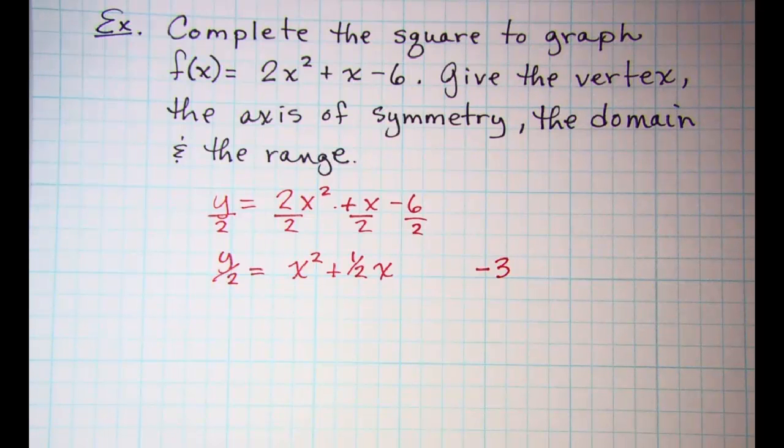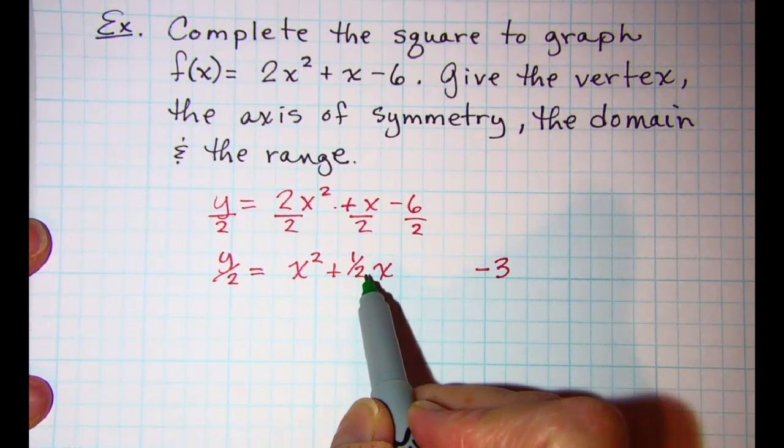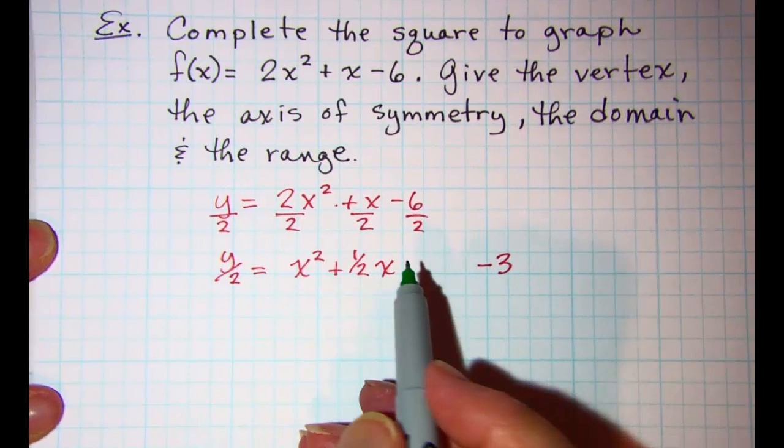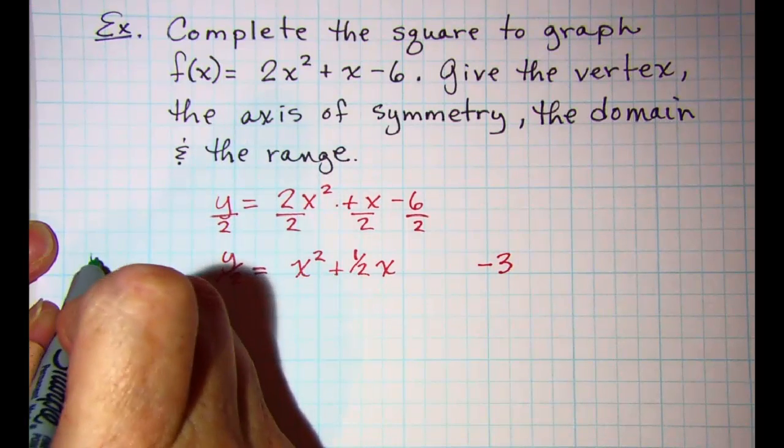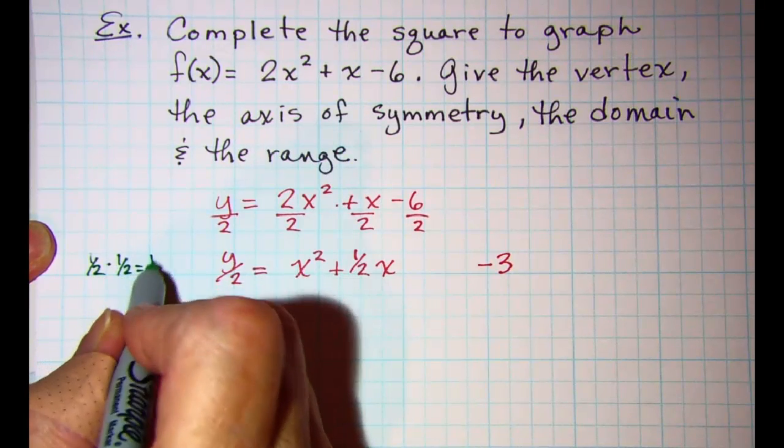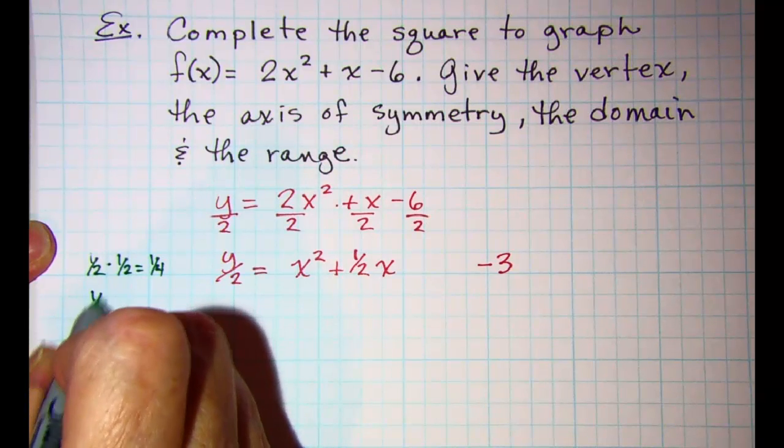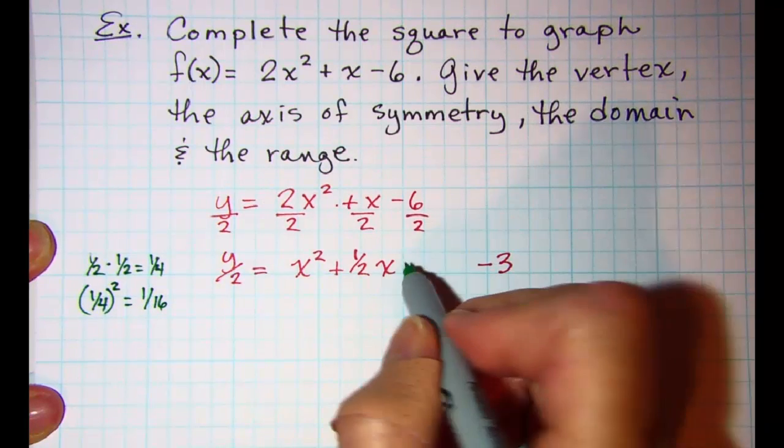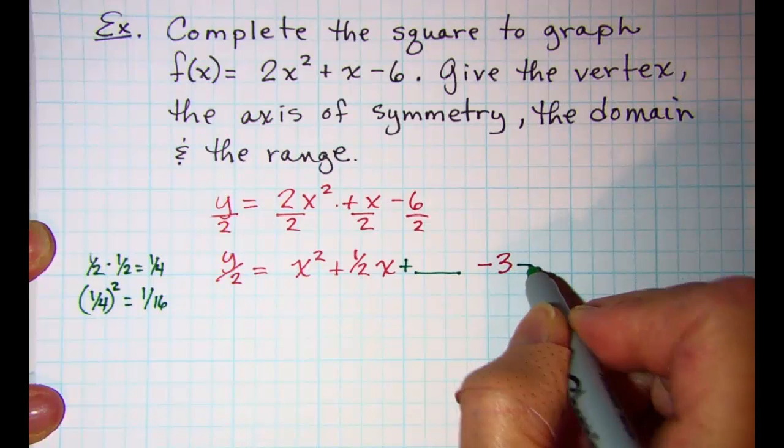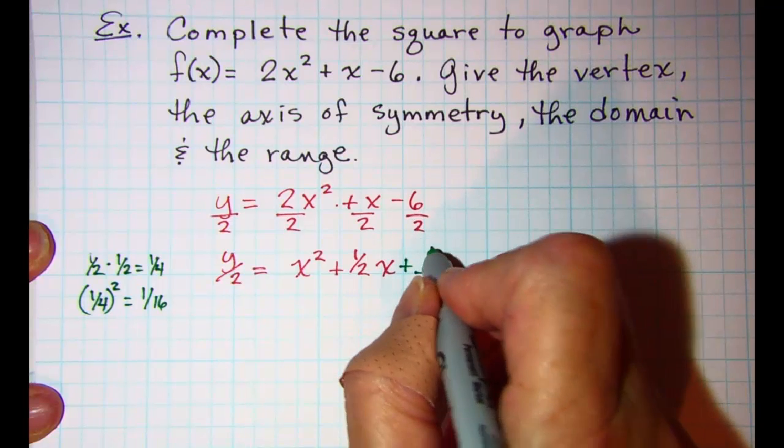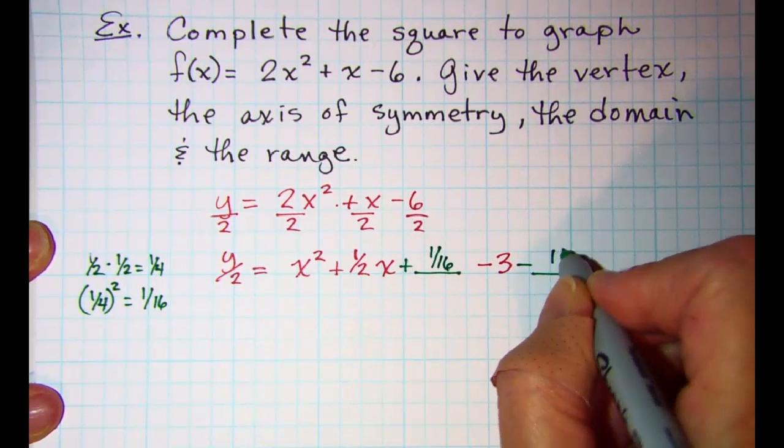My next step is to take the coefficient of x and half it, then square that result and then add it and subtract it. So let's take the 1 half, the coefficient of my x, multiply that by 1 half and I'll get 1 fourth and square that value. I'll have 1 sixteenth and then I'm going to add that and subtract it from the right side of my equation. So plus 1 sixteenth and minus 1 sixteenth.